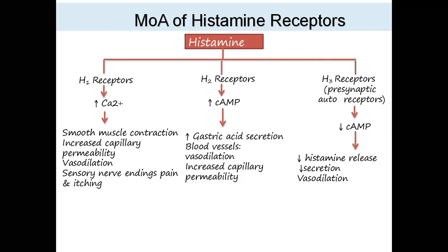H1 receptors: where calcium is released in amounts. H1 receptor effects include smooth muscle contraction, increased capillary permeability, vasodilation, and sensory nerve ending pain and itching. Wherever calcium is released in amounts, these effects will be present — these are H1 receptor effects, meaning effects caused by histamine acting on H1 receptors.